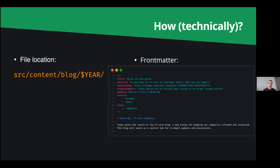Also very important is the publication date, because that's when the post actually goes live on the website. It needs to be in ISO format — keep in mind UTC offsets need to be correct, otherwise something will be off. Then the authors field, where you write a YAML array with your GitHub usernames, which are nicely rendered in all the different places. We also have an optional labels field — we don't have many posts yet to need filtering, but in the future we're thinking of using labels to filter posts into different sections.